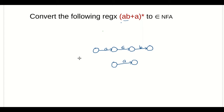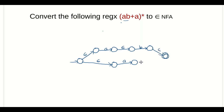We remove the existing final state and initial state, then add a new initial state. From the new initial state we add epsilon transitions to both NFAs. We also add a new final state, and add epsilon transitions from the final states of both NFAs to the new final state. This gives us the epsilon-NFA that accepts aB union a.